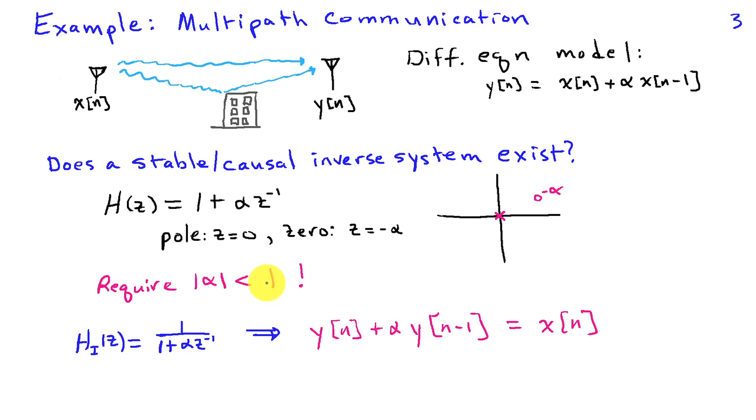In most physical systems, that's going to certainly be the case because there's a loss of energy at a reflection, and there's also, for a longer propagation path, one would expect that there would be a loss of energy as well. In general, for physical systems, this is going to be true, and our inverse system, then, is just 1 over H of z. In other words, it's 1 divided by 1 plus alpha z inverse. We can convert that back to a difference equation, which is y of n plus alpha y of n minus 1 equals x of n. This difference equation here will invert the difference equation for the multipath that we started with.